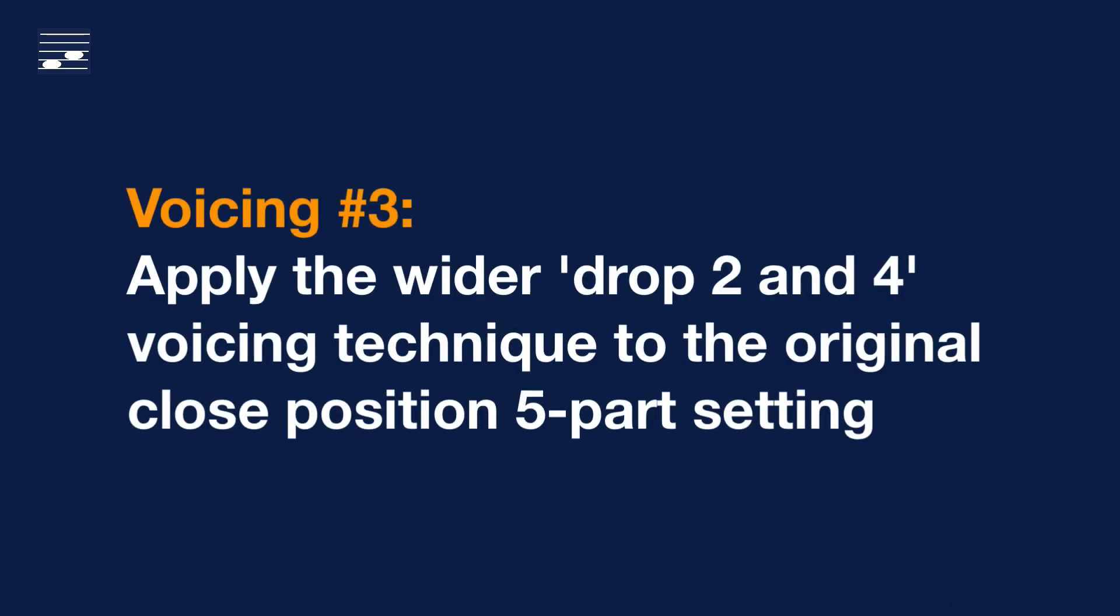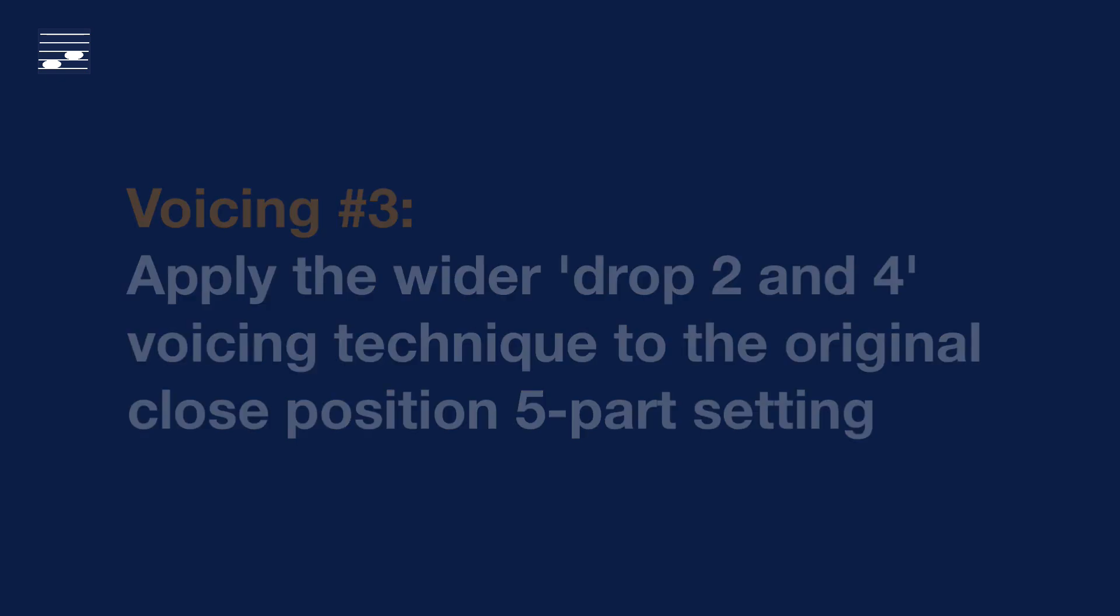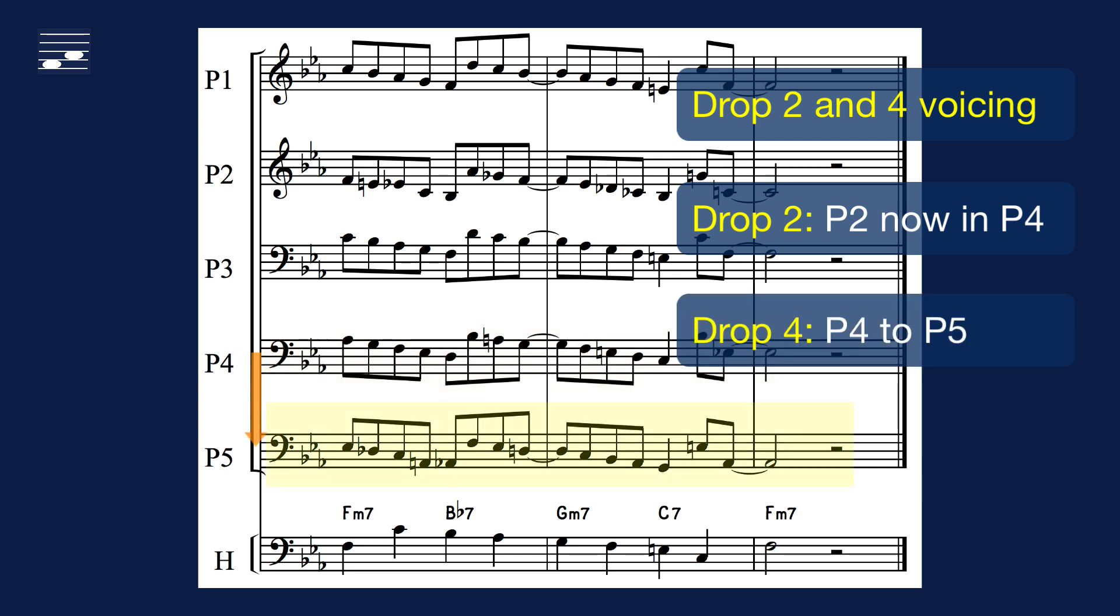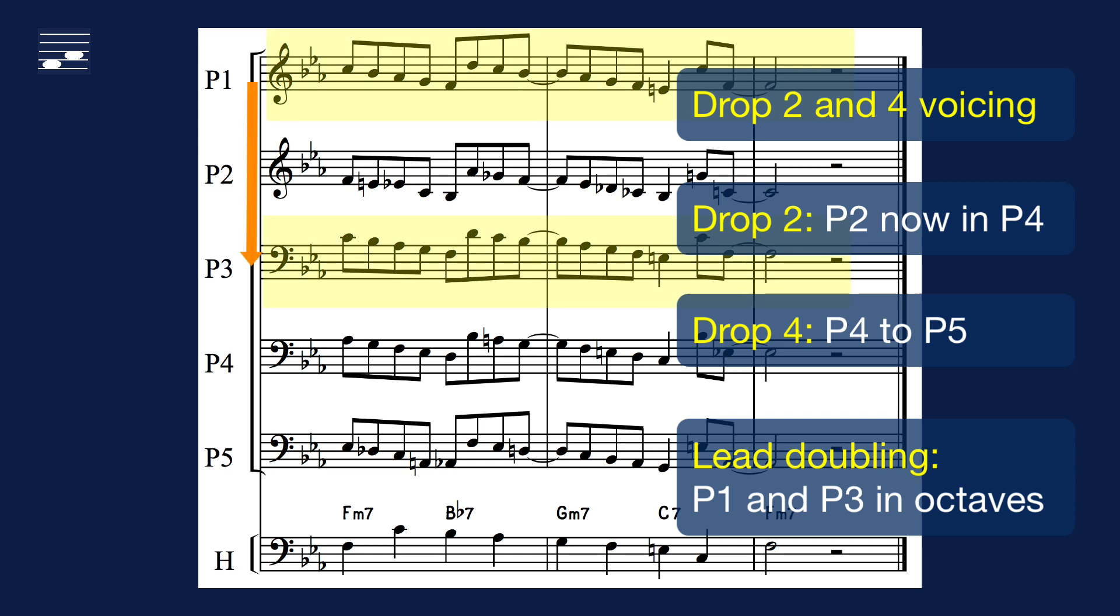We may create an even wider and more open voicing by applying the drop 2 and 4 technique to the original 5 part close voicing setting. The drop 2 implies moving and transposing part 2 to the lower octave in part 4. The same holds for the original part 4, which lands on part 5. After redistributing all parts, now part 1 and 3 play the lead in octaves.